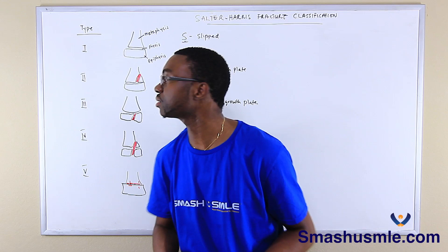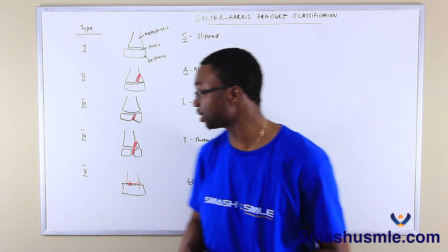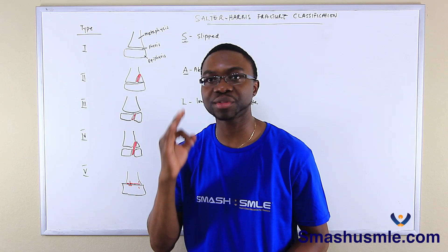Type three is Lower — lower than the growth plate, below the growth plate. It's a fracture through the physis that goes through the growth plate and also through the epiphysis. That is type three.